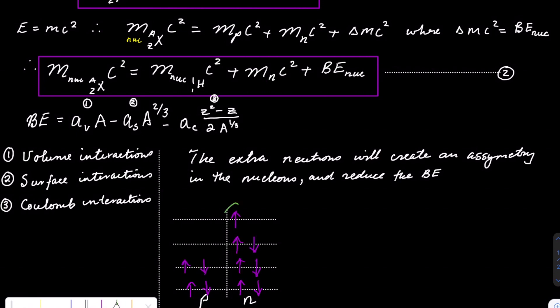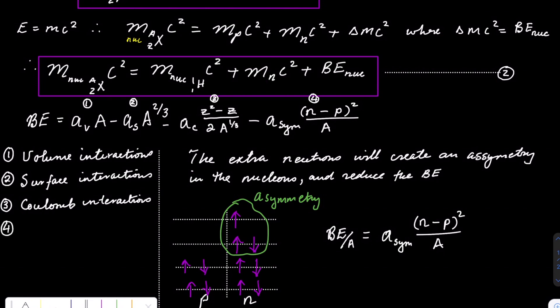We know that four nucleons can occupy the same energy state, and once you run out of protons, the remaining extra neutrons create an asymmetry. So the binding energy per nucleon is directly proportional to the square of the difference between protons and neutrons divided by the number of nucleons. And this gives us the fourth term in the binding energy expression, which corrects for the asymmetry that is produced by excess neutrons in a nucleus.